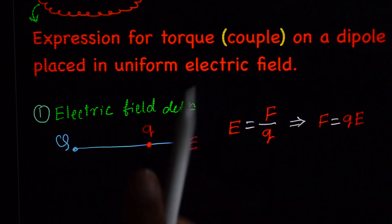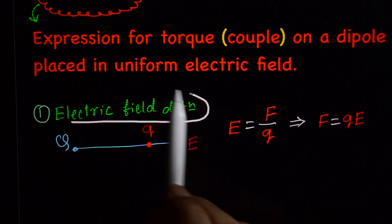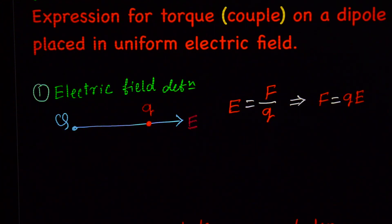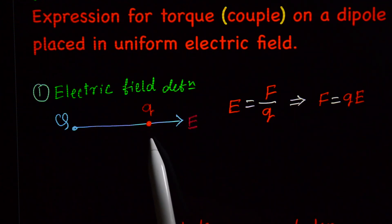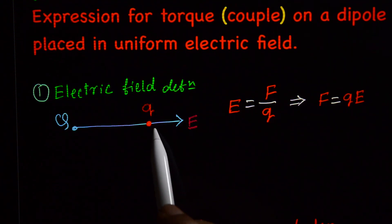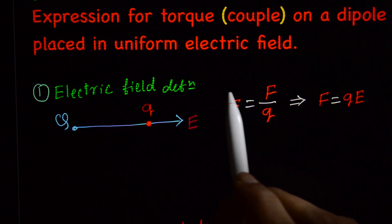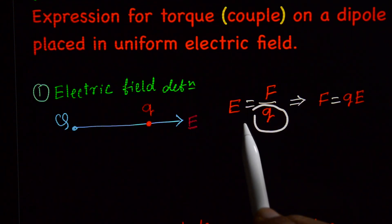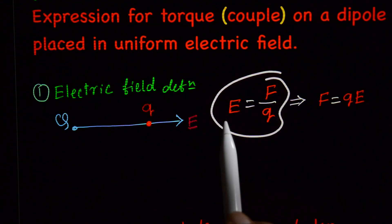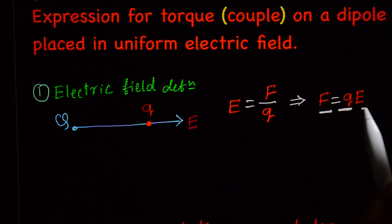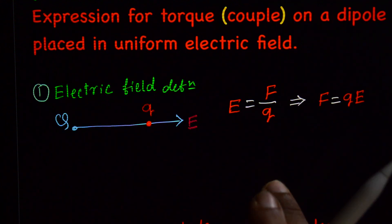If you have this topic, you will need three things. First is the electric field definition. Suppose there is a source charge, and because of this source charge, if you place a test charge, the test charge experiences an electric field. E equals force experienced by the test charge divided by the magnitude of the test charge. That is the definition of electric field. From this definition, F equals Q into E.